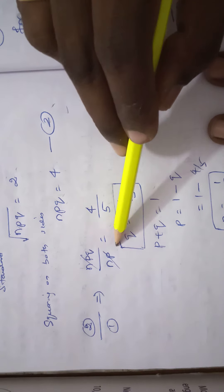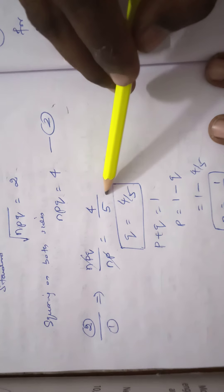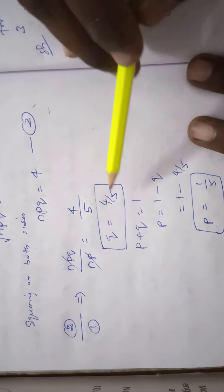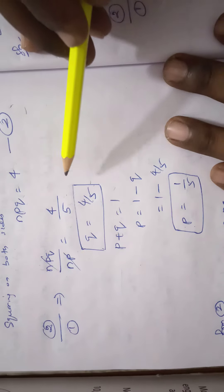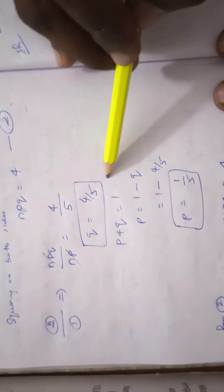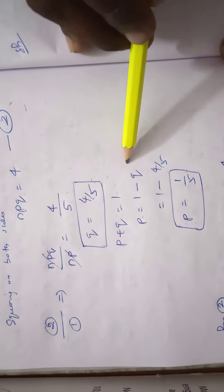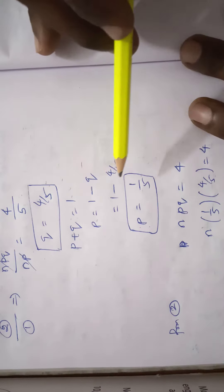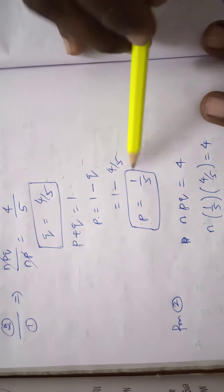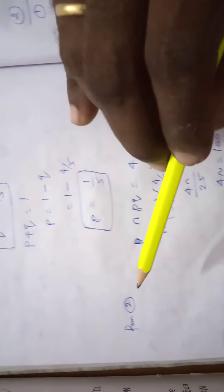Dividing equation 2 by equation 1: Npq / Np = 4/5. Np cancels, so q = 4/5. Since total probability equals 1, p = 1 − q = 1 − 4/5 = 1/5.